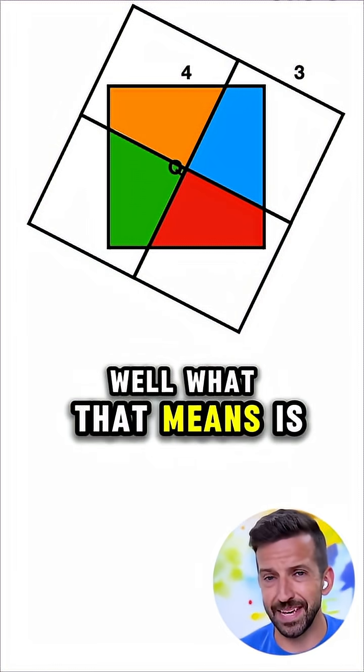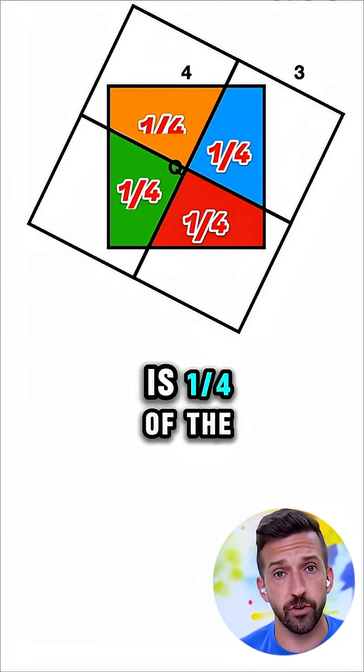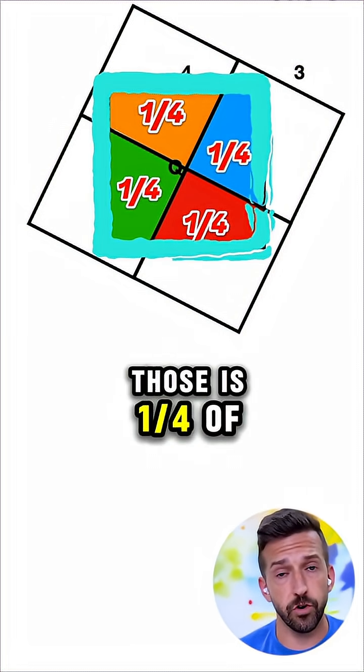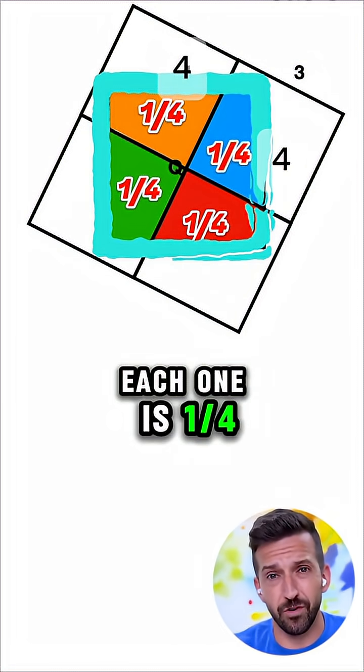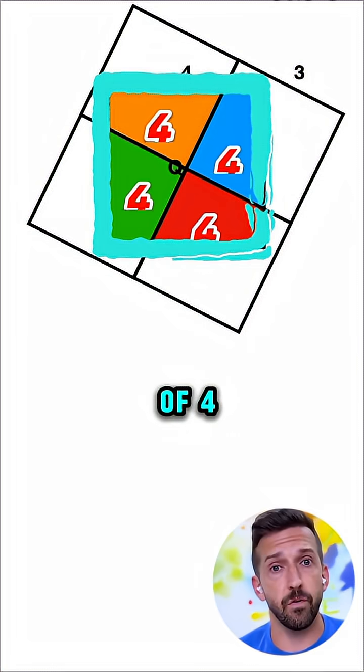Well, what that means is each one of those is 1 quarter of the larger square. So each one of those is 1 quarter of the square that's 4 by 4. In other words, each one is 1 quarter of 16 for an area of 4.